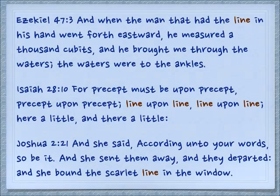Joshua 2:21 — 'And she said, according to your words, so be it. And she sent them away, and they departed, and she bound the scarlet line in the window' — a physical thread or piece of cloth.